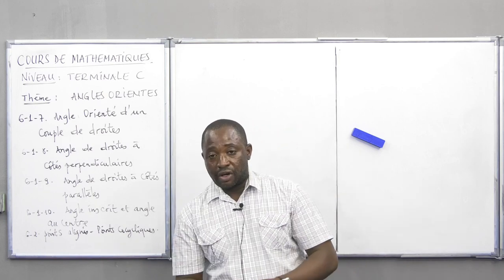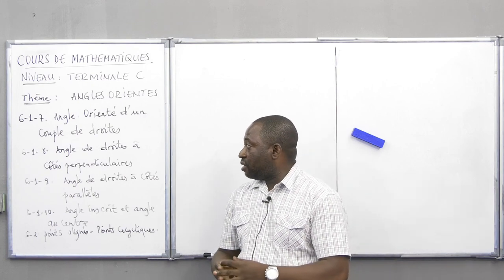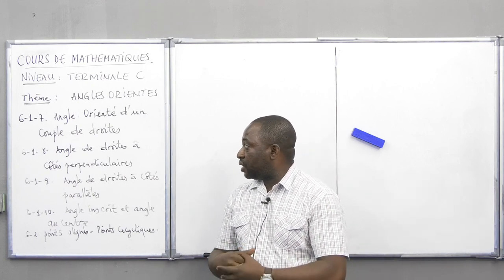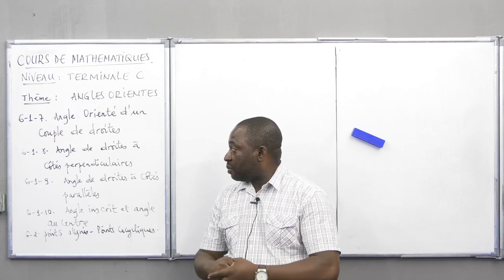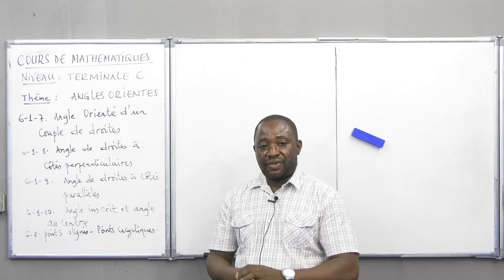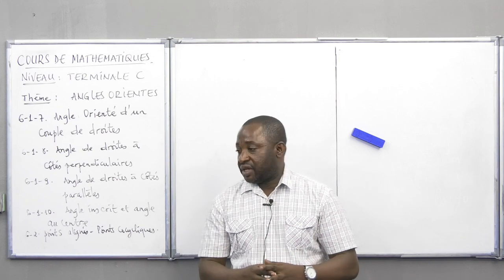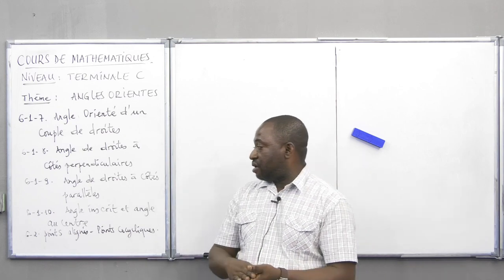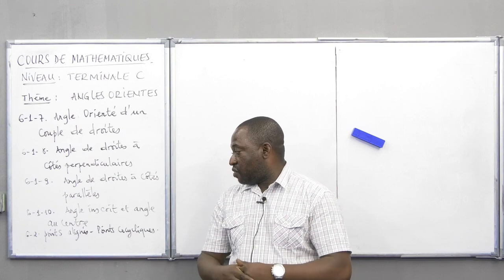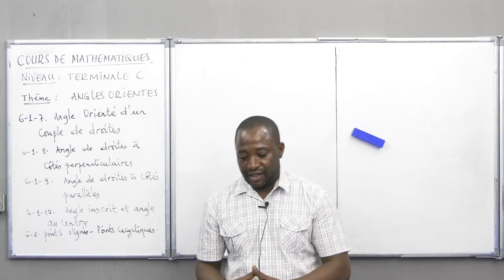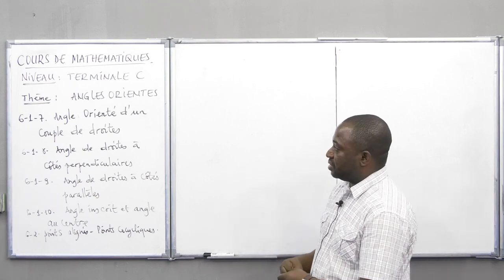Nous allons parler des angles orientés du couple de droite. Au début, nous allons revenir sur quelques propriétés. Ensuite, nous allons aborder la propriété d'angle de droite à côté perpendiculaire, la propriété d'angle de droite à côté parallèle, le théorème de l'angle inscrit et de l'angle au centre, puis les points alignés et les points cocycliques. Voilà comment est structuré le plan de cette séance.